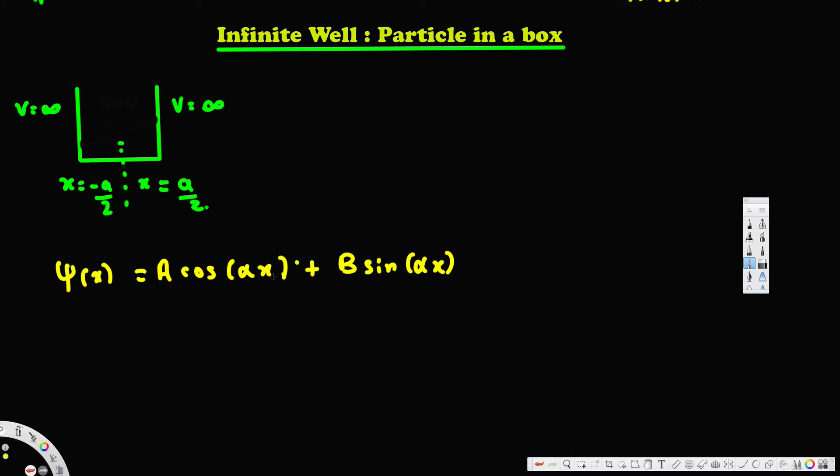When we plug that one, what we are going to get is: A cos(αa/2) + B sin(αa/2) = 0.